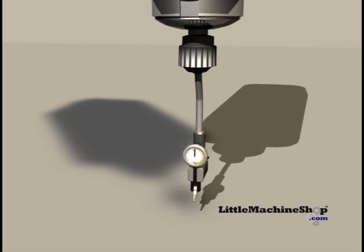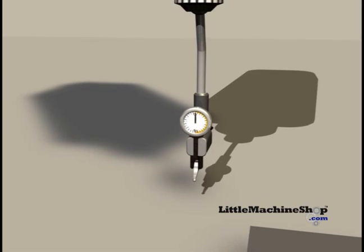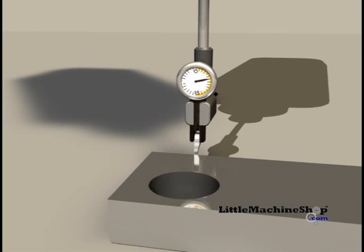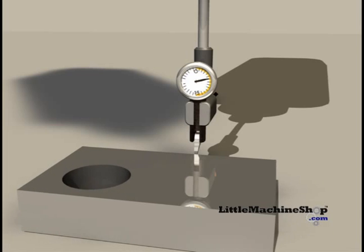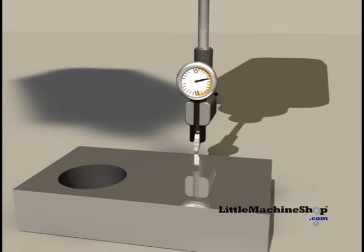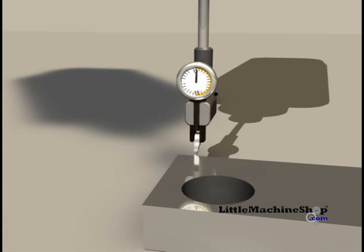Mount the probe in the collet. Then mount a dial indicator like a last word on the probe. Make sure the dial and the collet are secure enough to hold the dial rigidly. Now you can indicate your vise jaw or your material making it parallel with your axes.